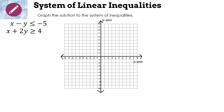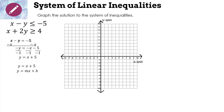Graph the solution to the system: x − y ≤ −5 and x + 2y ≥ 4. For the first, x − y = −5 is not in slope-intercept form. Subtract x from both sides and divide by −1: y = x + 5. Slope = 1 (written as 1/1), y-intercept = 5. Graph dot at 5, go up 1 over 1. It's a solid line because of 'less than or equal to.'